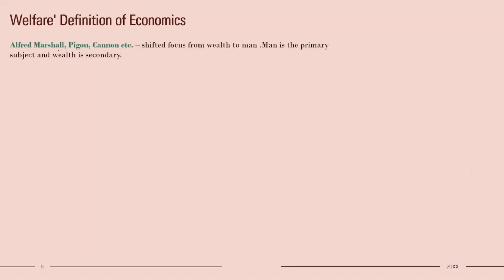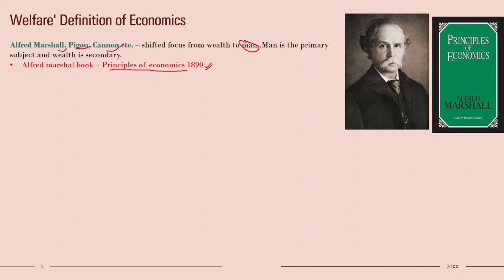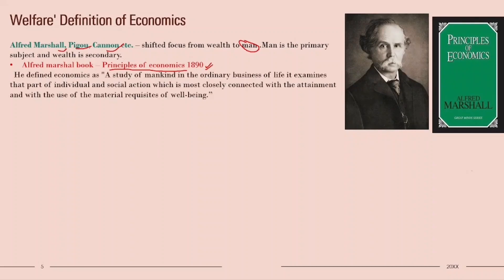Now let's look at the welfare definition of economics. Alfred Marshall and Pigou/Cannon were economists who gave the welfare definition, shifting focus from wealth to man. They said man is the primary subject matter and wealth is secondary. Alfred Marshall wrote 'Principles of Economics,' published in 1890. He defined economics as a study of mankind in the ordinary business of life — it examines individual and social action most closely connected with attainment and use of material requisites of well-being.